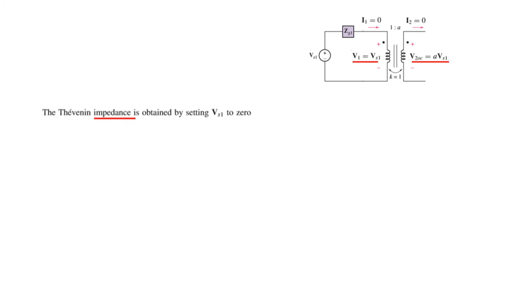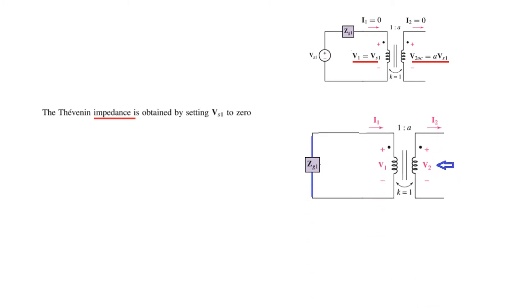The input voltage is Vs1 and the open circuit voltage is A·Vs1, which is our Thevenin voltage. To find the Thevenin impedance, we set the voltage source to 0. The circuit then allows us to look from the output terminals, and ZTh equals ZG1 multiplied by A squared — the impedance is multiplied by the square of the turn ratio.